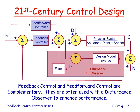The goal of the disturbance observer is to make the physical system behave like our physical model. It takes the actual output of the physical system and puts it through a design model inverse to generate the input into the physical model that would result in the output control variable C. It then compares that input to the actual input, treating the difference as a disturbance, which the feedback controller will try to reject.